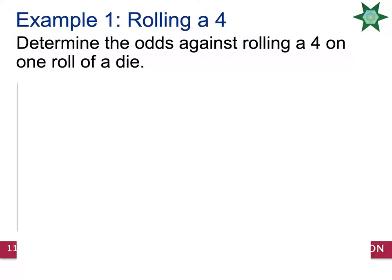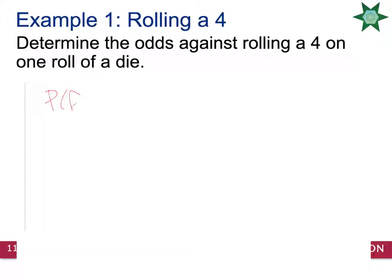For example, let's say you're rolling a die. Determine the odds against rolling a 4 on one roll of a die. That means we need the probability of failure divided by the probability of getting the 4. There's only one 4 on a die, so the probability of successfully rolling a 4 is 1 out of 6. The probability of failure is 5 out of 6.